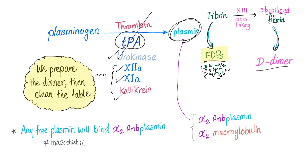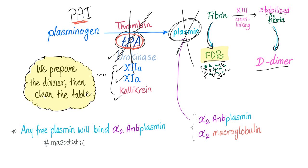We can inhibit TPA at this level, and we can inhibit plasmin at this level. Who inhibits TPA? The topic of today's video: plasminogen activator inhibitor. Plasminogen activator is just a fancy term for TPA, because TPA is the plasminogen activator par excellence. So when you say plasminogen activator inhibitor, it just means TPA inhibitor.